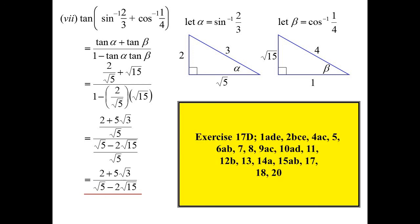For question 17d, we're working with compound angles. Remember: sine is sine cos cos sine — if it's the sine, it's the sine. Cosine is cos cos sine sine — if it's not the sine, it's not the sine. And tan is tan plus tan on 1 minus tan tan.